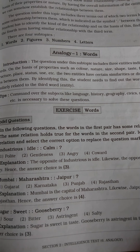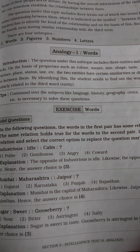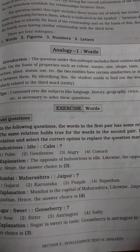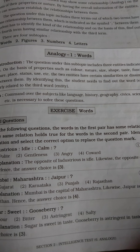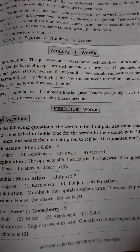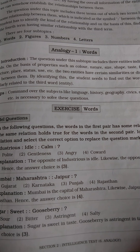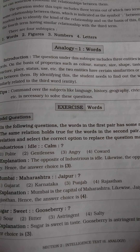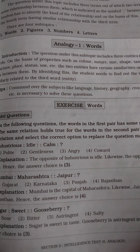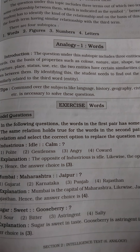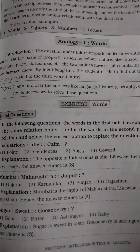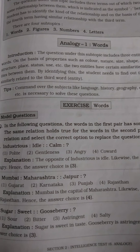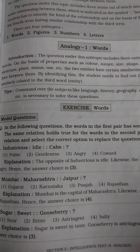We are going to learn first about analogy of words. The question under this subtopic includes three entities indicated by words, on the basis of properties such as color, nature, size, shape, taste, function, structure, place, status, use, etc. The two entities have certain similarities or dissimilarities between them. By identifying this, the student needs to find out the word or entity similarly related to the third word.